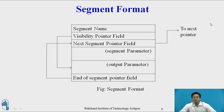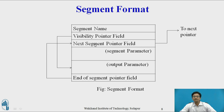The segment format includes: first, the segment name; after that, a display pointer field, that is a visibility pointer field; next, a segment pointer field. The visibility pointer field is linked to output parameters. The end-of-segment pointer field is linked to the next segment pointer field, and the next segment pointer field is linked to the next segment. This is the basic segment format, which includes segment parameters and output parameters.